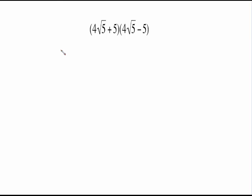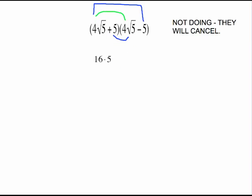This one I recognize as a special product. So I do the first times the first: 4 radical 5 times 4 radical 5 — that's 4 times 4 is 16, and radical 5 times radical 5 is 5. The middle terms cancel, so I move to the last times the last. 16 times 5 is 80. 80 minus 25 is 55.